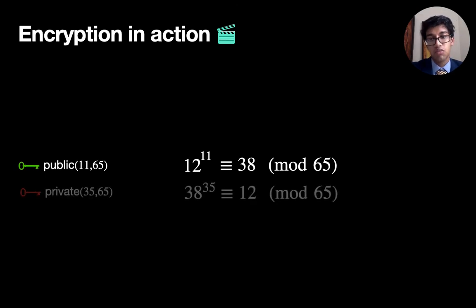To decrypt it, we do the same thing, but with our private key. Our private key provides us with a decryption constant. So 38 to the power of 35, after being divided by 65 gives us a remainder of 12. And that is our original message.